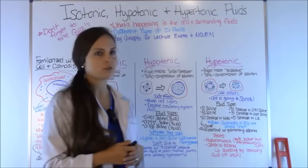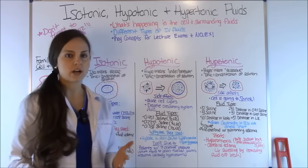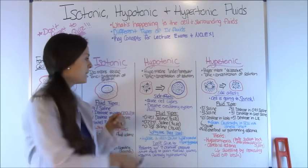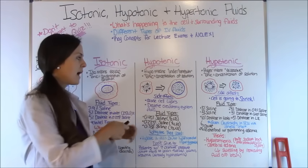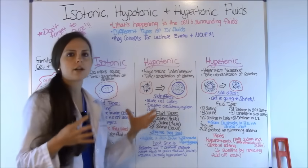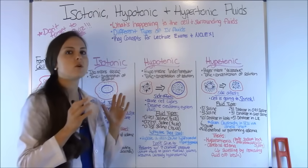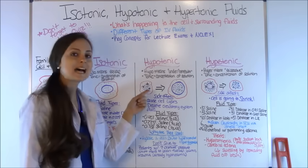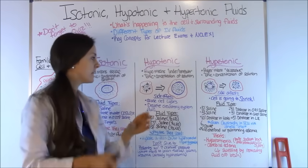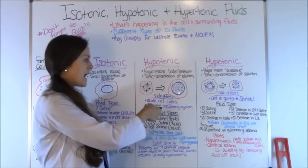Now let's go over hypotonic solutions. Hypo means under or beneath, so it's low — the concentration of the solution is lower than it should be. Looking at this cell diagram, extracellularly you have not a lot of water molecules or solute (sodium), but on the inside of the cell you have all this water and solutes. According to osmosis, the less concentrated extracellular fluid will shift into the more concentrated inside of the cell. Your cell will swell up and can undergo lysis — it can rupture and break apart.